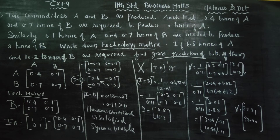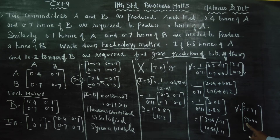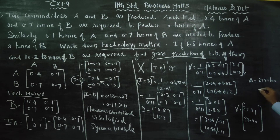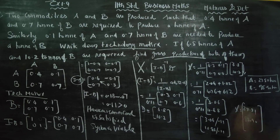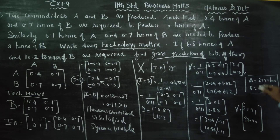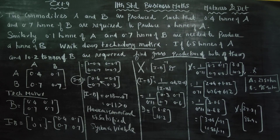Final answer: Gross output of A is equal to 27.81 tens. Gross output of B is equal to 98.90 tens. Output of A is equal to 27.81 tens and output of B is equal to 98.90 tens. Note: your book answer may differ — this is the exact correct answer. The new edition book answer may be wrong; please verify it. Thank you.